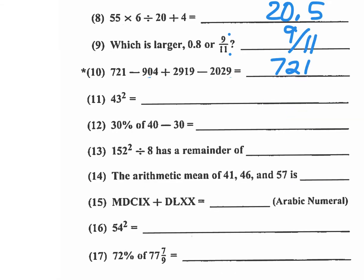Number 11 is 43 squared, which is 1849. Or you can work this out. You can say, well, that's 40. Subtract 3 and then add 3 to 43. That would be 46 plus 3 squared.